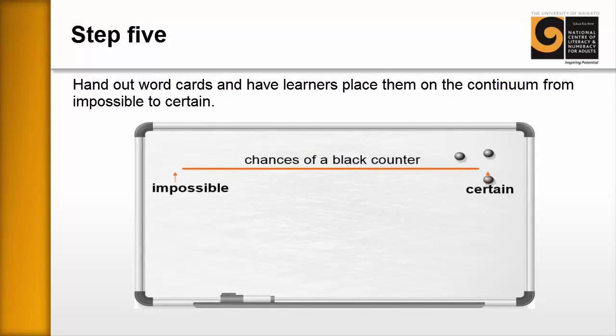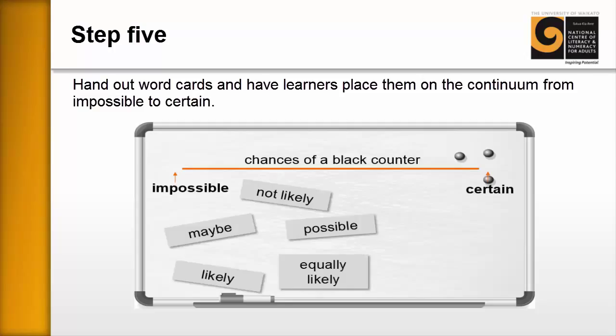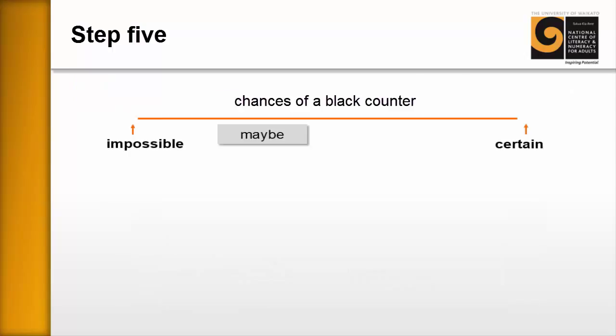Now continuing with step five, hand out the word cards that are included as a PDF, place them on the learners' desks, a set each, and ask them to arrange those words where they think they would fit, sitting between impossible and certain. So the learners will come and put them on the board or in their groups.